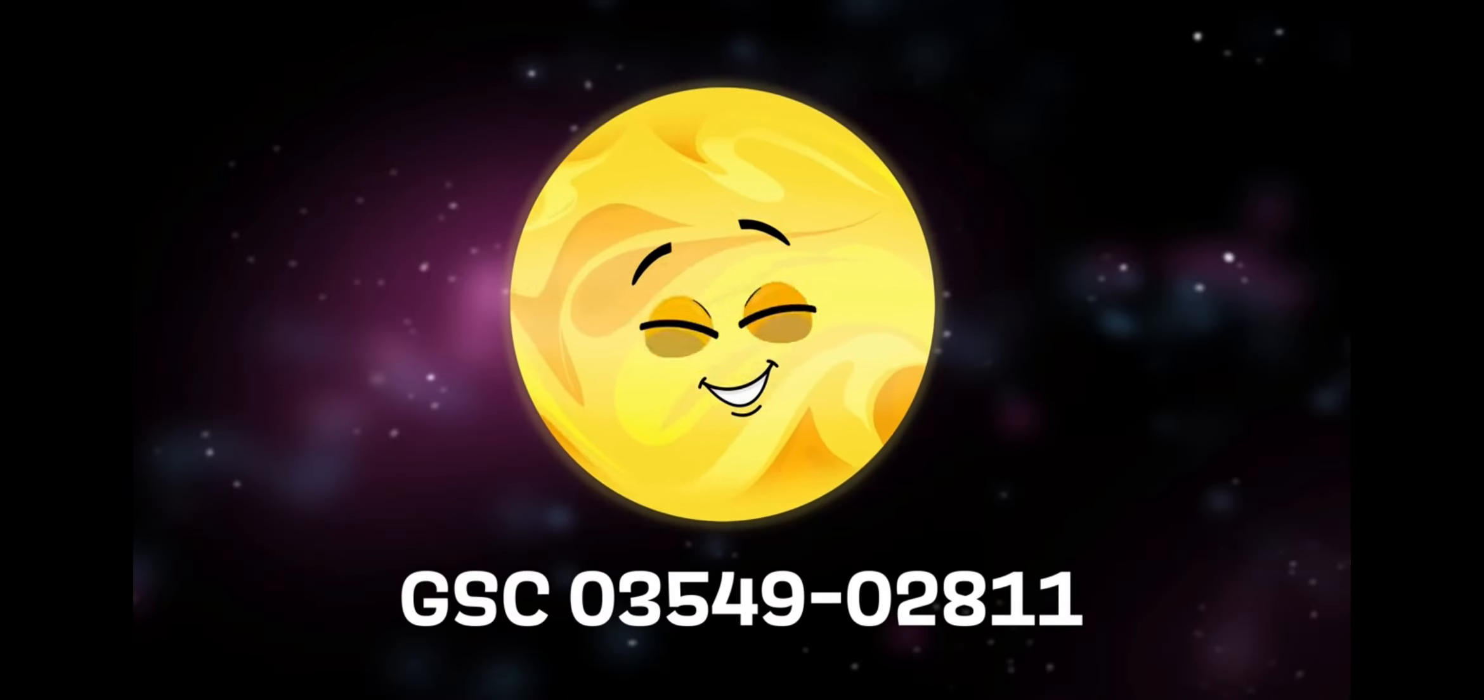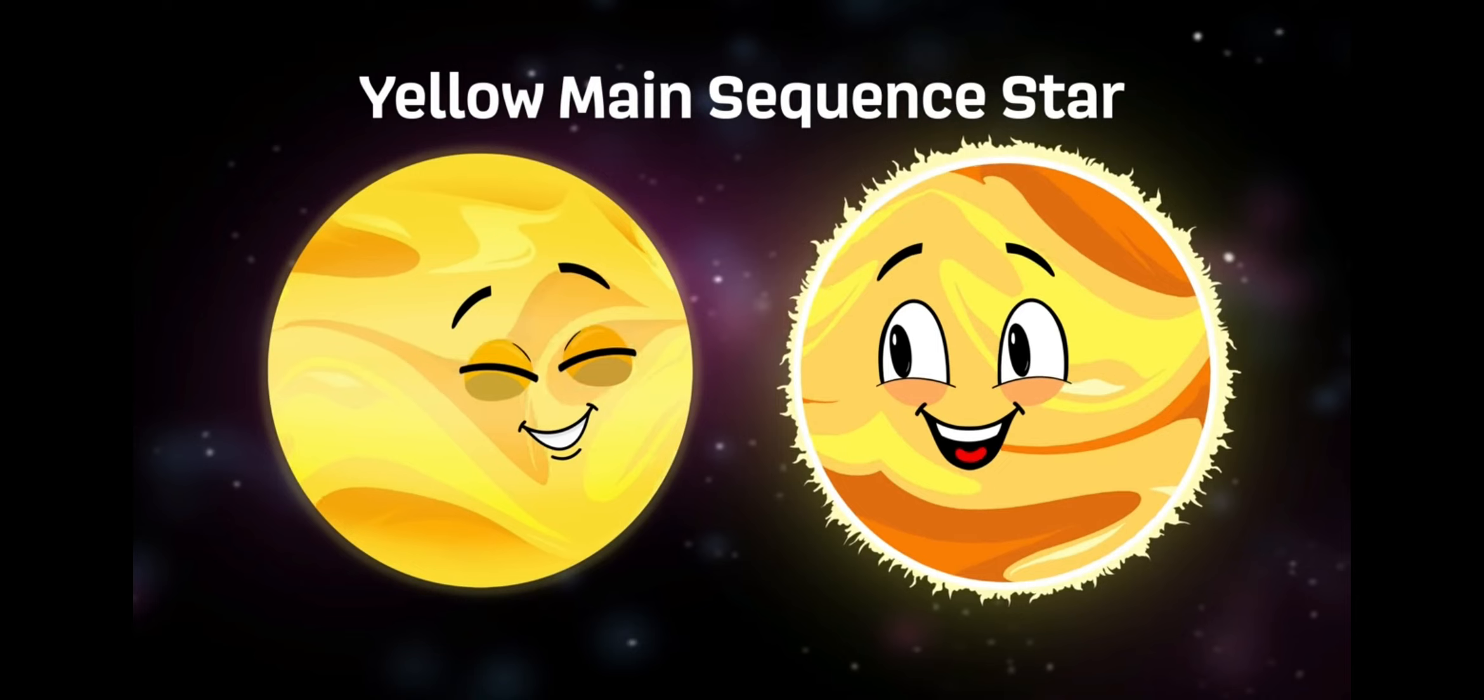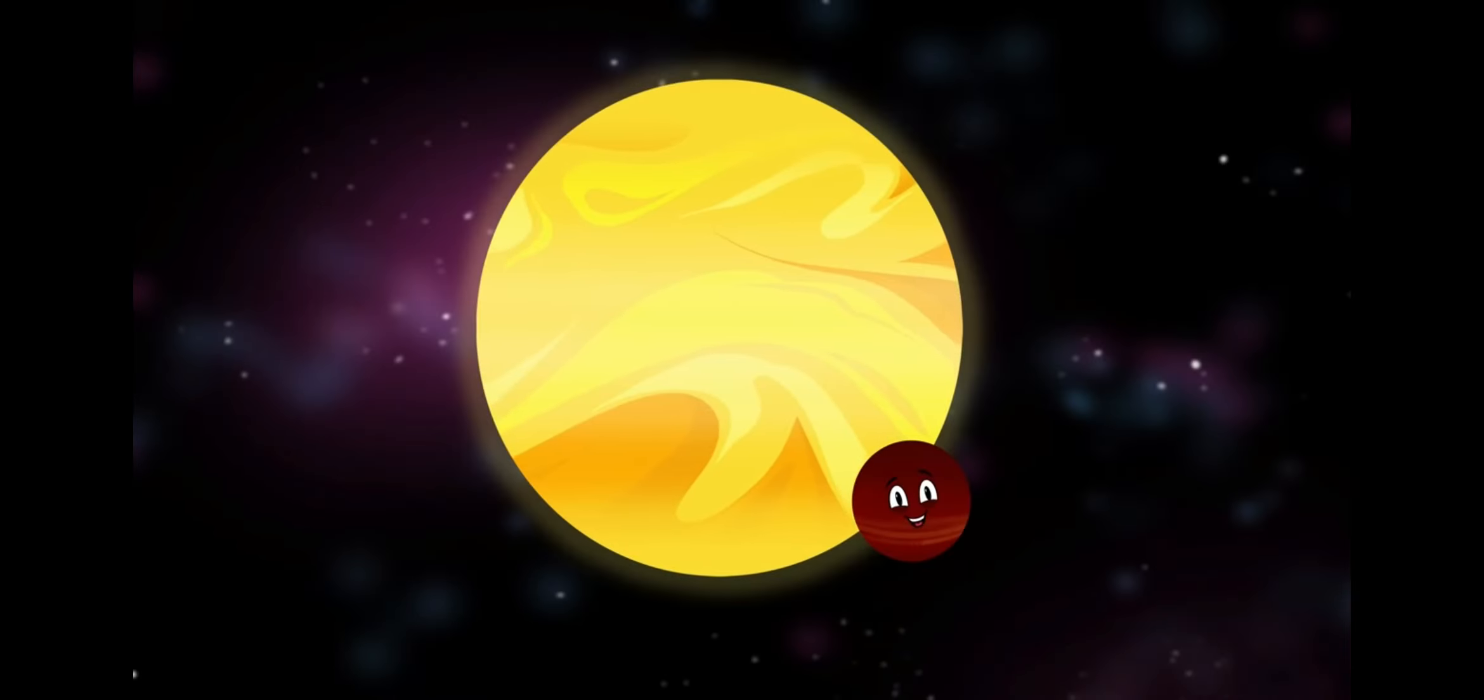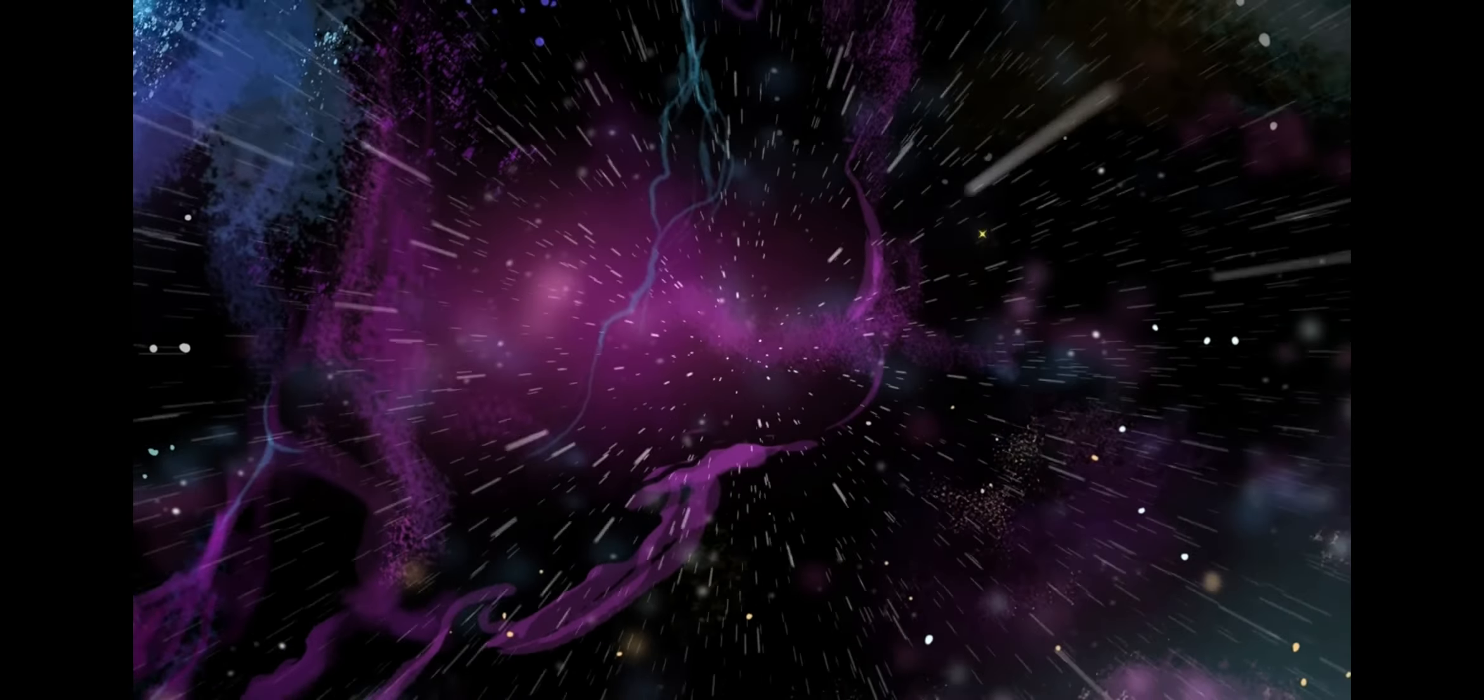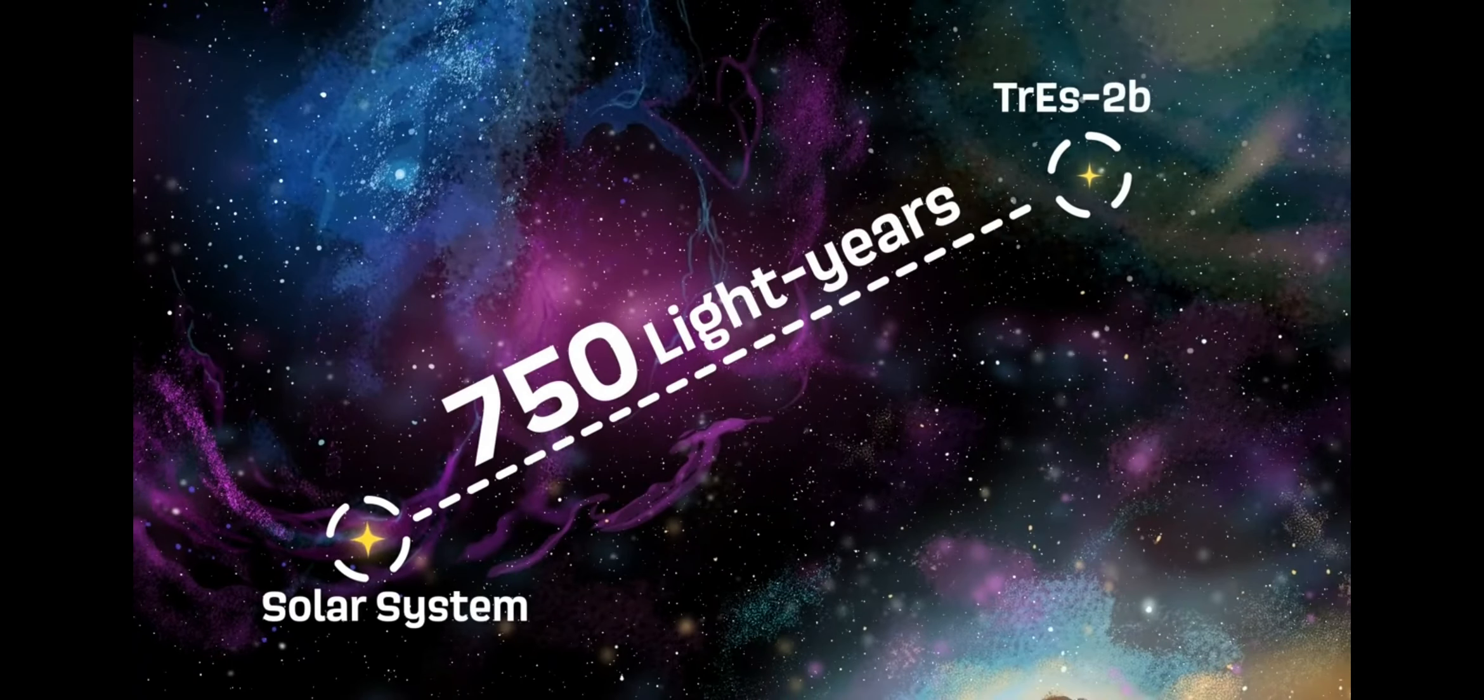GSC 03549-02811 is the star that I orbit and a long-named one. My parent star is a yellow main sequence star similar to your sun, just to keep you on par. I belong to a constellation in the far northern sky. Its name is Draco, which is Latin for dragon I imply. I'm 750 light years away from your solar system. That's where I'll stay.